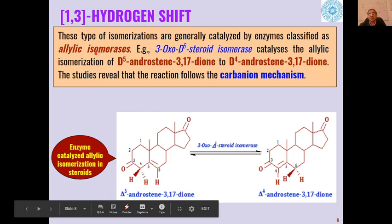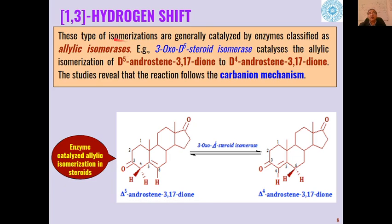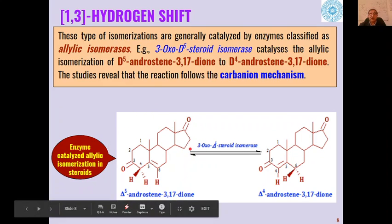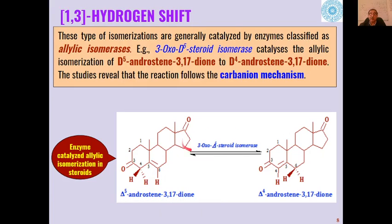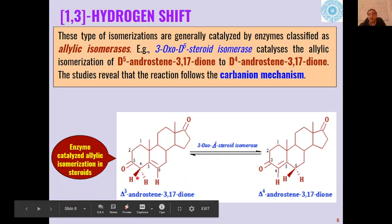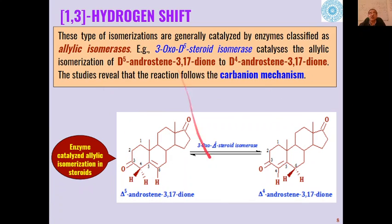One example of a 1-3 hydrogen shift uses allylic isomerases in steroidal compounds. Δ5-androstene-3,17-dione (with a double bond at the 5-6 position) in the presence of 3-oxo-Δ5-steroid isomerase is converted to Δ4-androstene-3,17-dione. A hydrogen shifts from position 4 to position 6 — a 1-3 hydrogen shift — and the double bond shifts from Δ5 to Δ4. These reactions are called 1-3 hydrogen shift isomerizations.